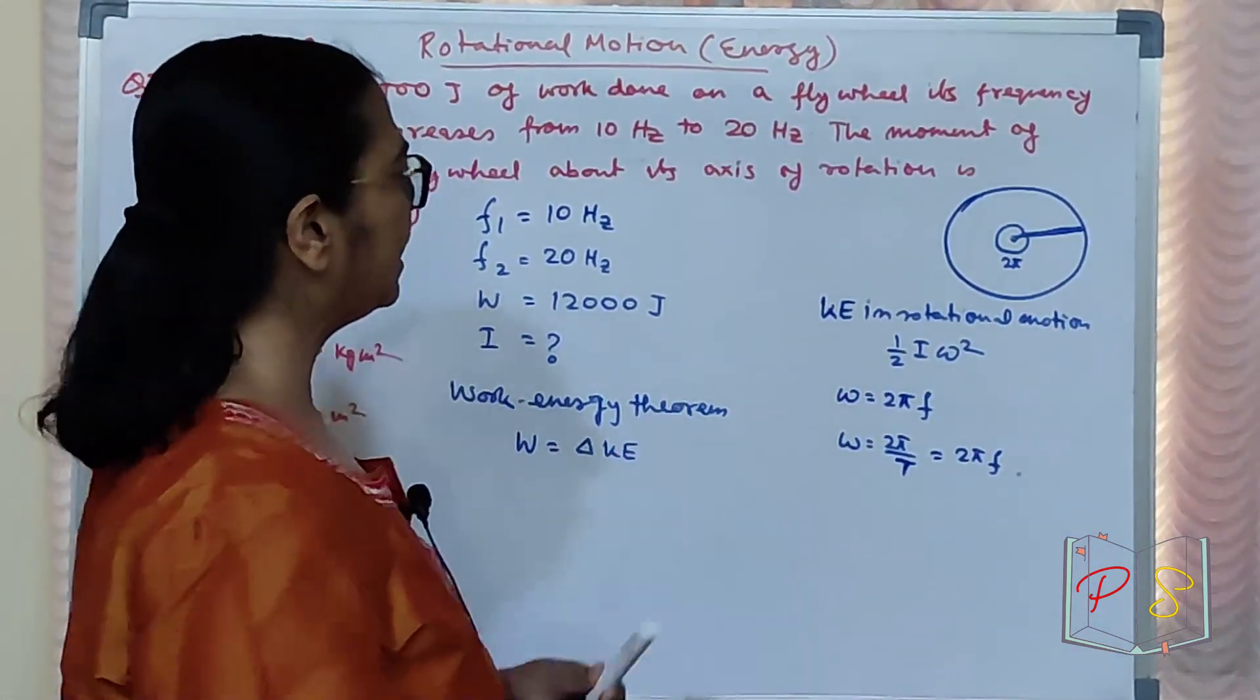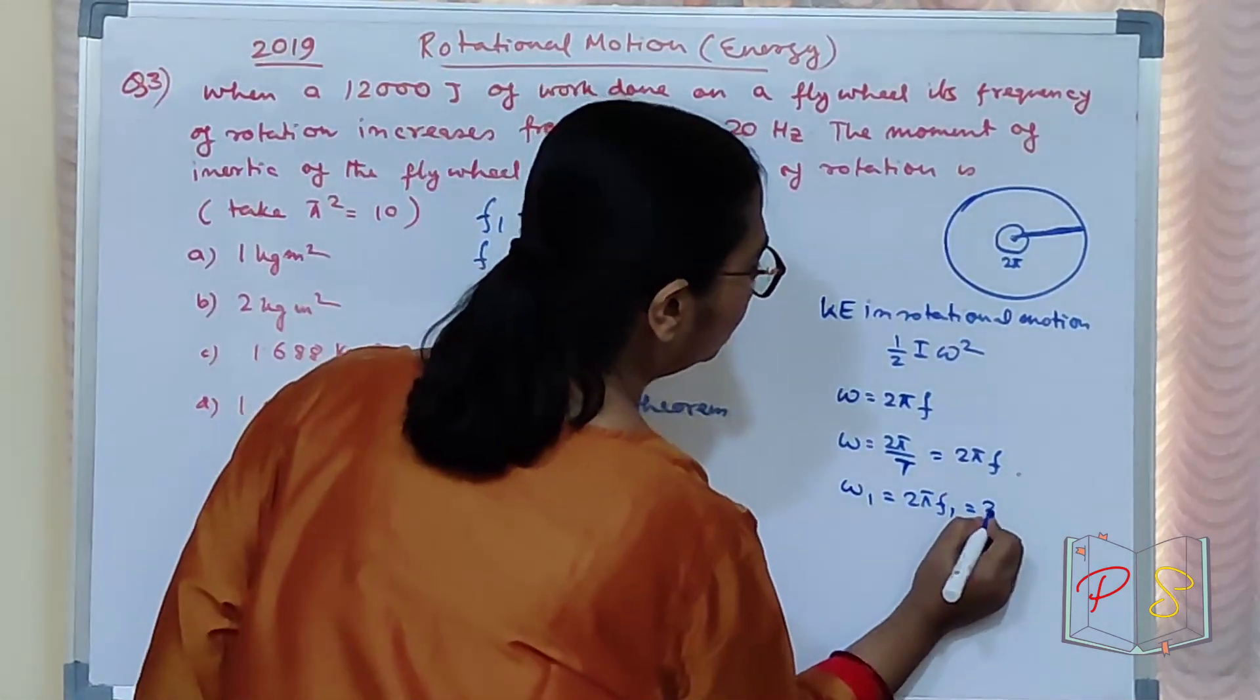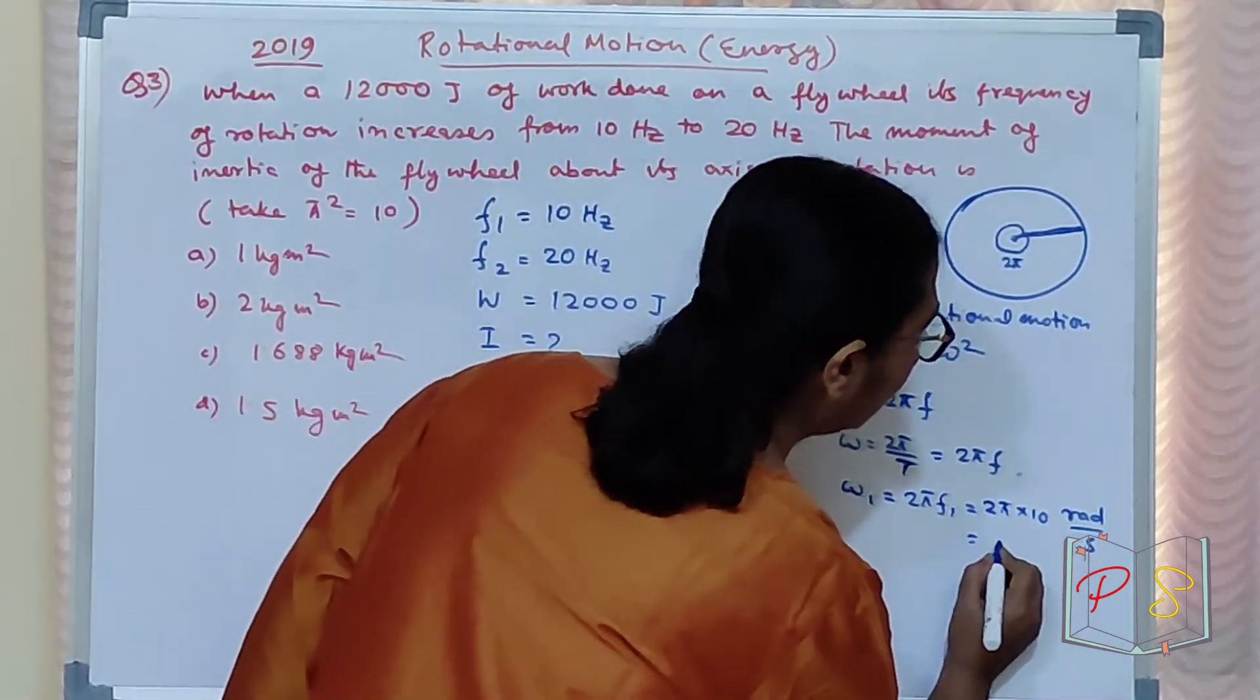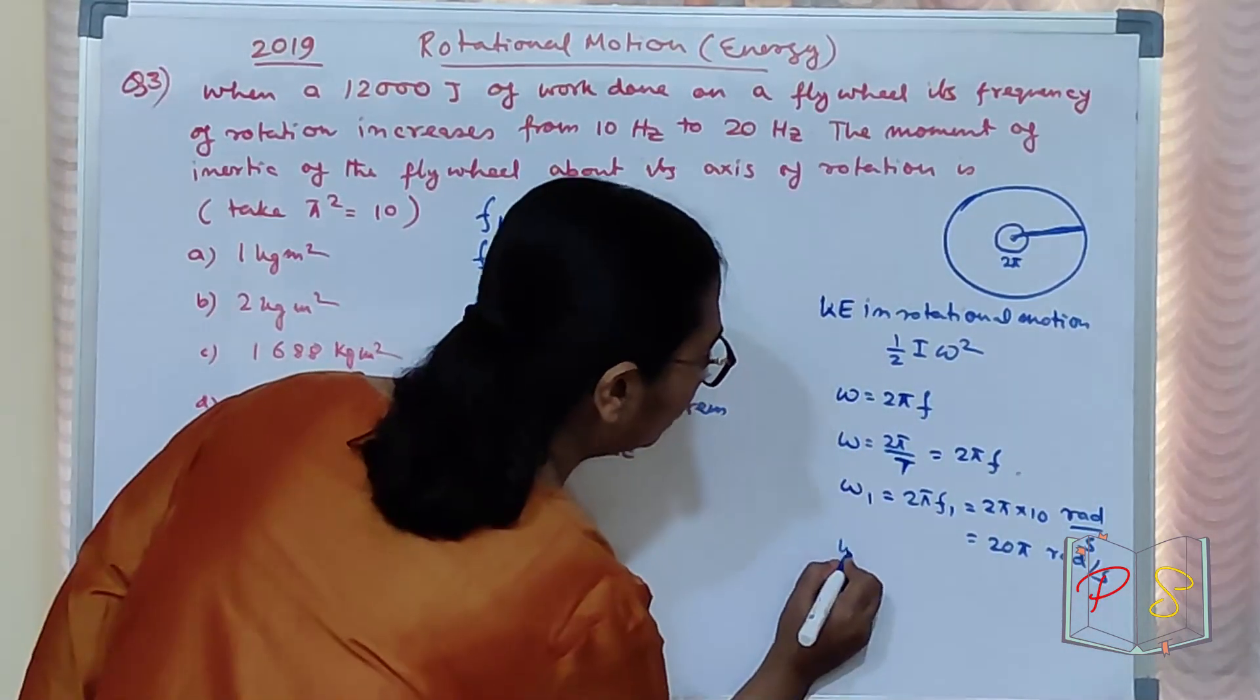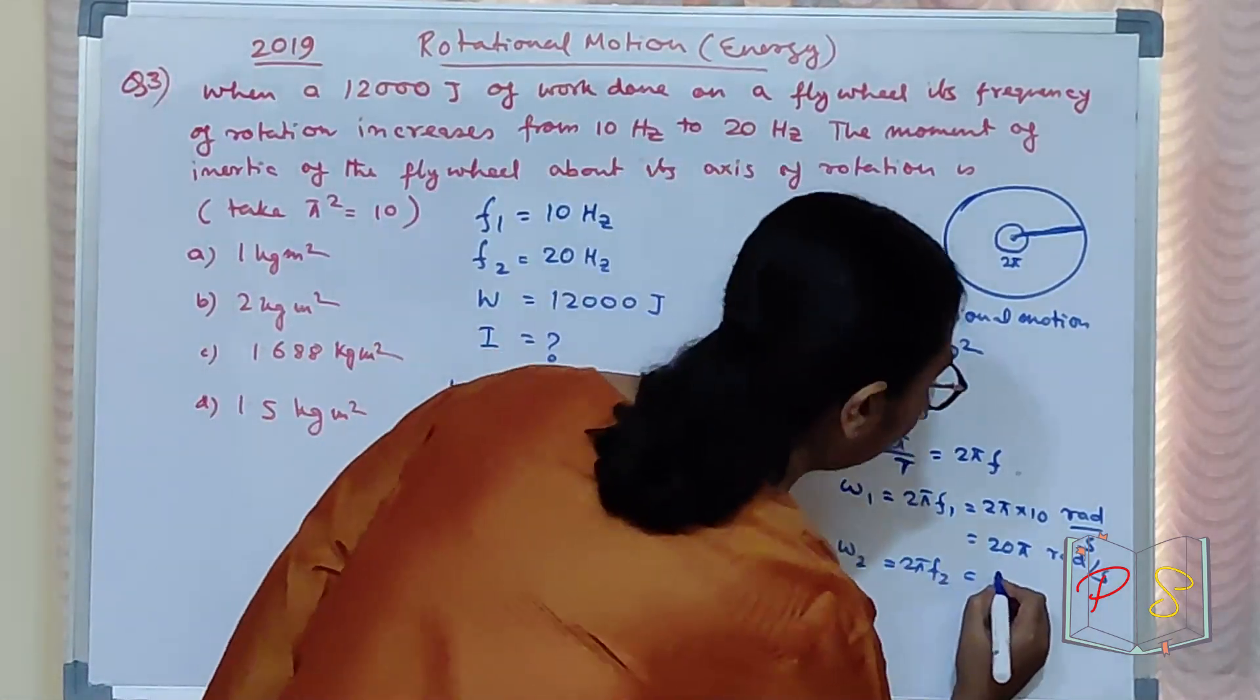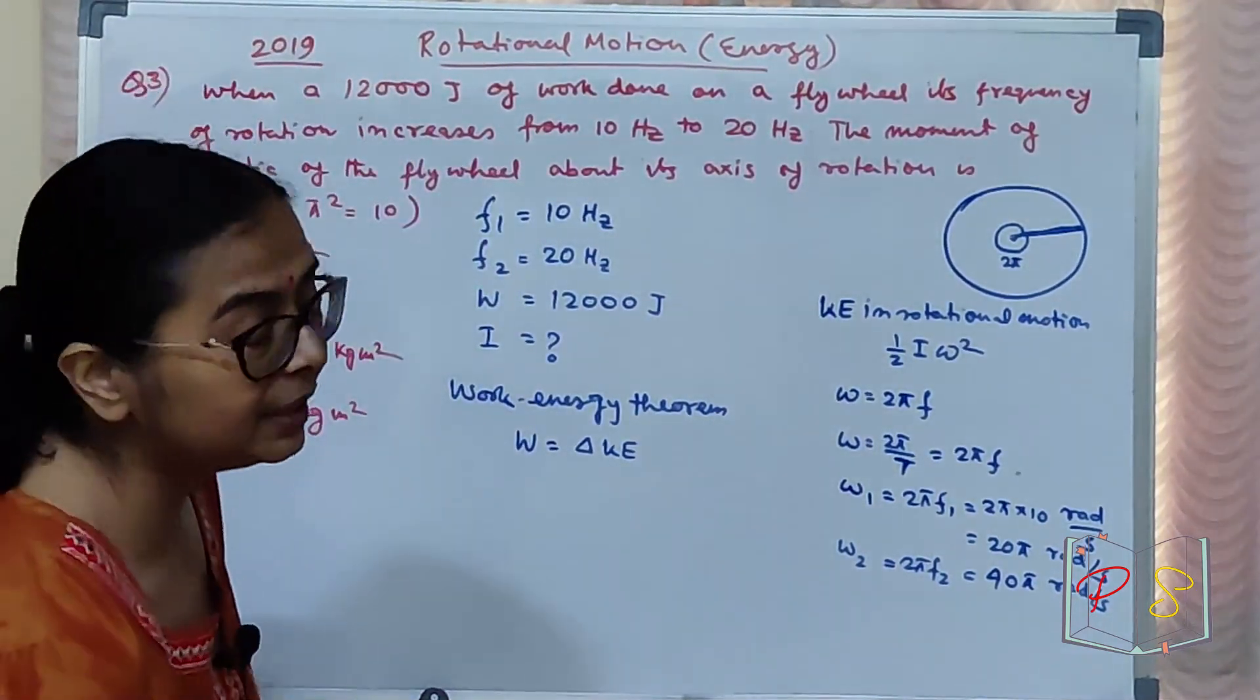F ka value de diya. Toh omega ka value mujhe nikalna hai. Omega 1 karlo. 2 pi F1 equal to 2 pi into 10. 2 pi into 10. Unit kaise hoga? Radian per second. Kya aa gaya? 20 pi radian per second. Similarly, omega 2 nikal hoge. 2 pi F2 karke kitna aa gaya? 2 pi is se multiply karoge. Toh 40 pi. 40 pi radian per second. Clear? Bilkul clear ho gaya.